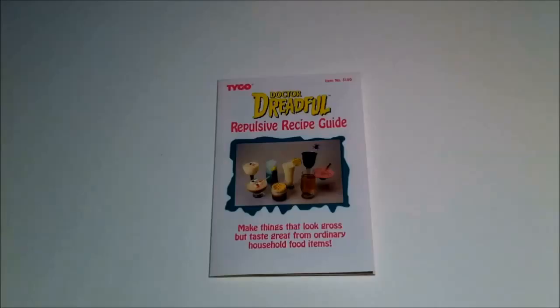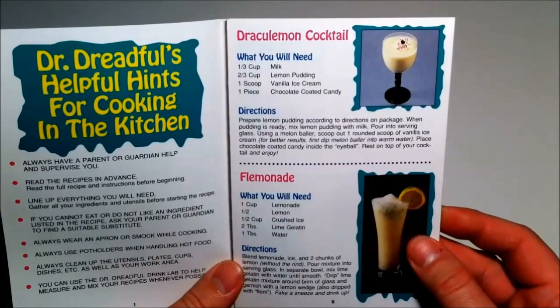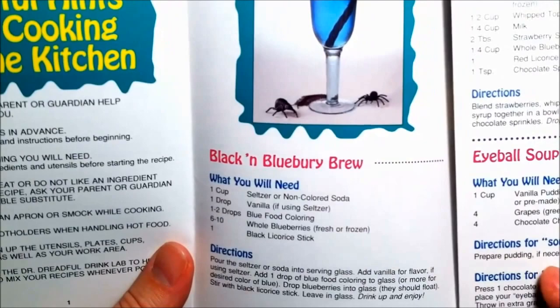Okay. I wanted to give everybody a better look at this repulsive recipe guide. I only touched on it briefly earlier. Draculamond Cocktail, Fluminade, Black and Blueberry Brew, Vampire Bug Juicer, Eyeball Soup.